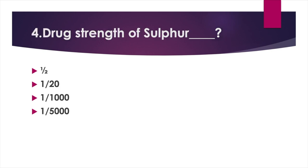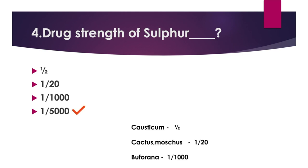Drug strength of Sulphur — Option A: 1/2, Option B: 1/20, Option C: 1/1000, Option D: 1/5000. Answer: Option D, 1/5000. Drug strength of Caustic: 1/2. Cactus and Moschus: 1/20. Bufo rana: 1/1000.